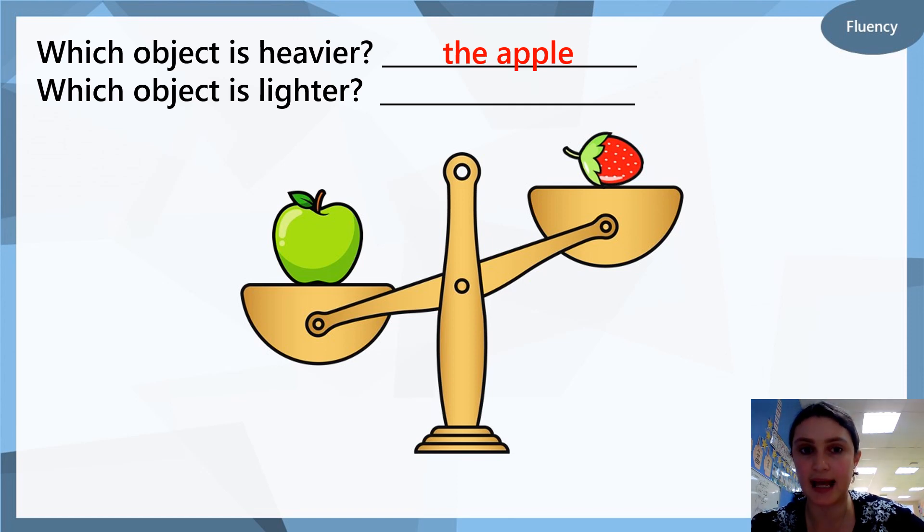So the apple is heavier because that side of the scale is down, and the strawberry is lighter because that side of the scale is up. Did you get it right?